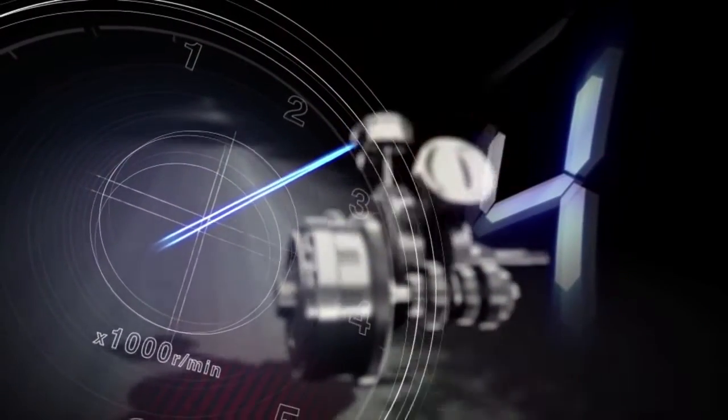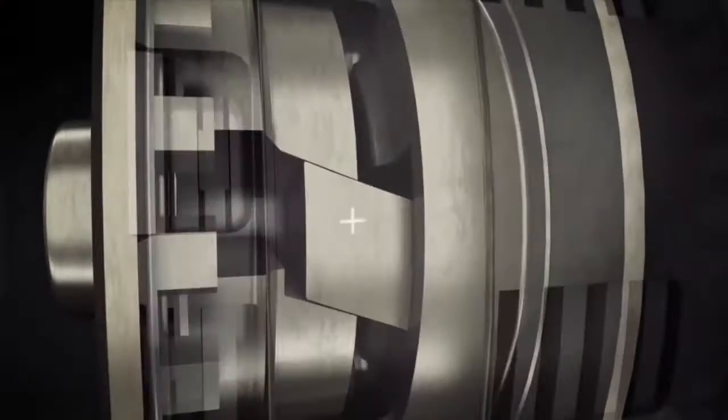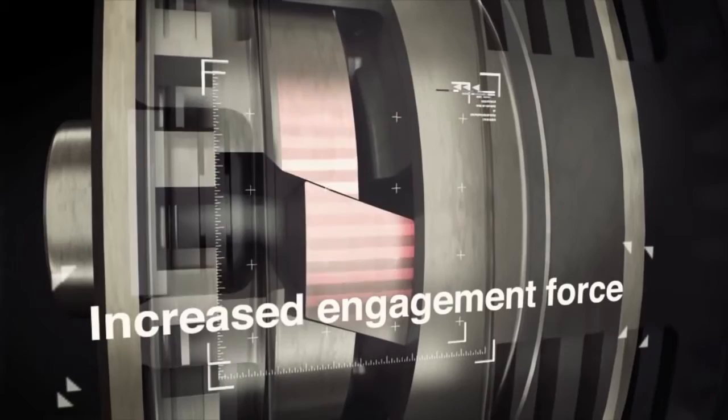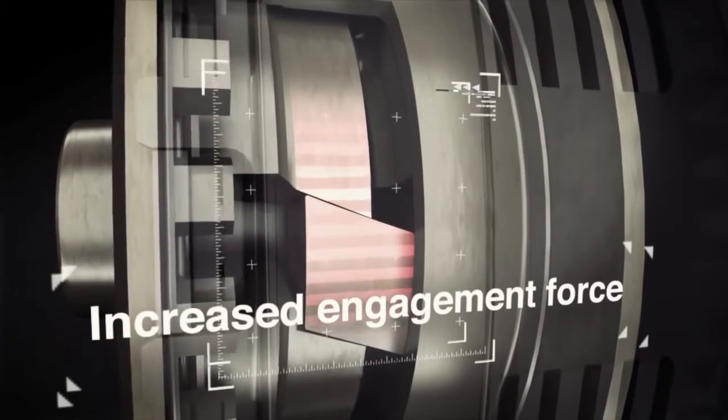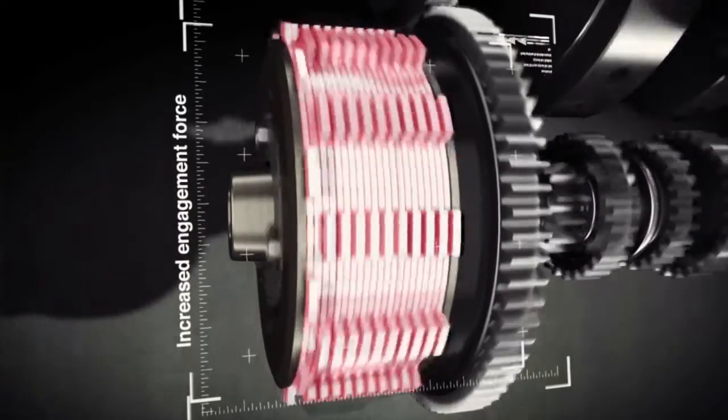During acceleration, these ramps force the clutch boss and pressure plate toward each other, increasing the clutch engagement force. This design is the perfect complement to the high torque output of the beefy 113 cubic inch engine.